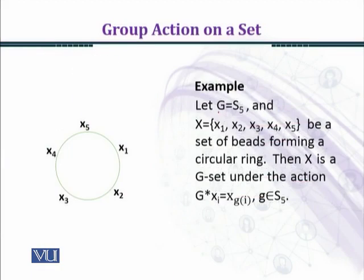Let's move to another example. Let G = S5, the symmetric group, and let X = {x1, x2, x3, x4, x5}. Symmetric group S5 کا مطلب ہے کہ جس set کا symmetric group ہے اس میں elements one, two, three, four, five ہیں — یعنی پانچ elements ہیں۔